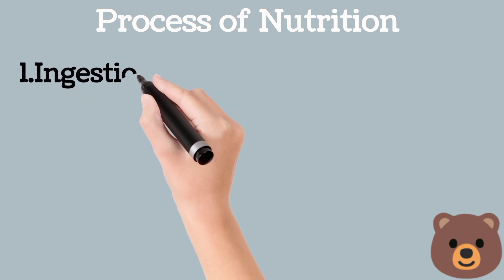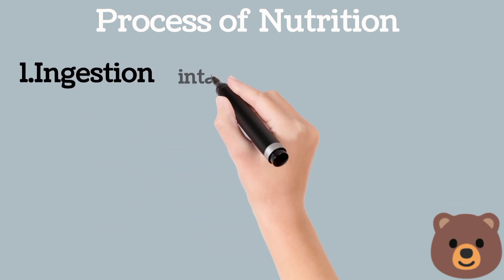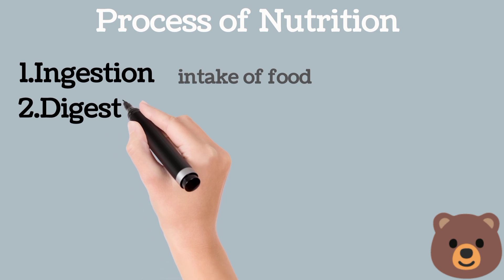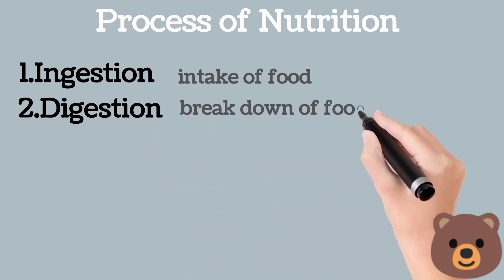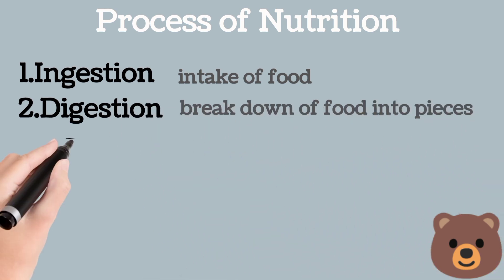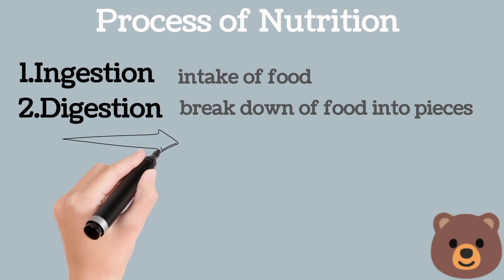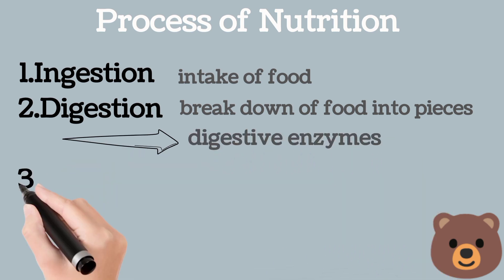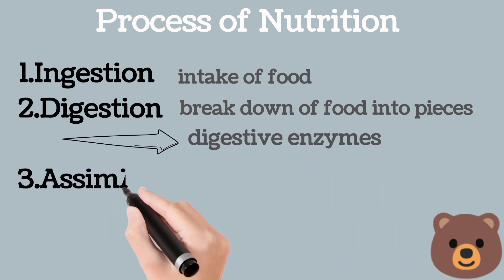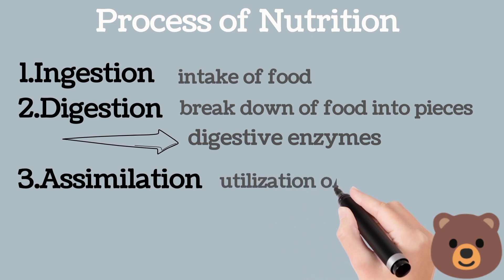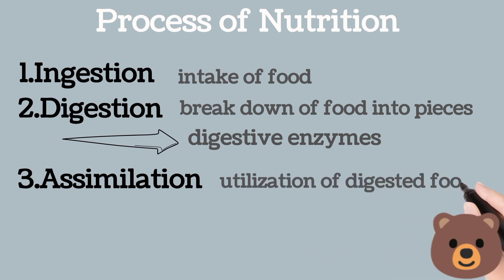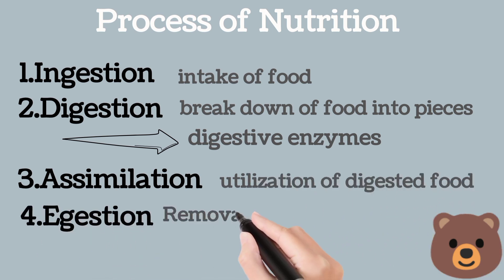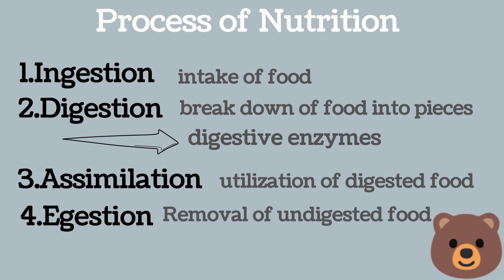Before going toward all of these, we first study the process of nutrition. Number one is ingestion, meaning intake of food. Number two is digestion, meaning breakdown of food into smaller pieces due to digestive enzymes. Number three is assimilation, meaning utilization of digested food. And egestion means removal of undigested food from the body.